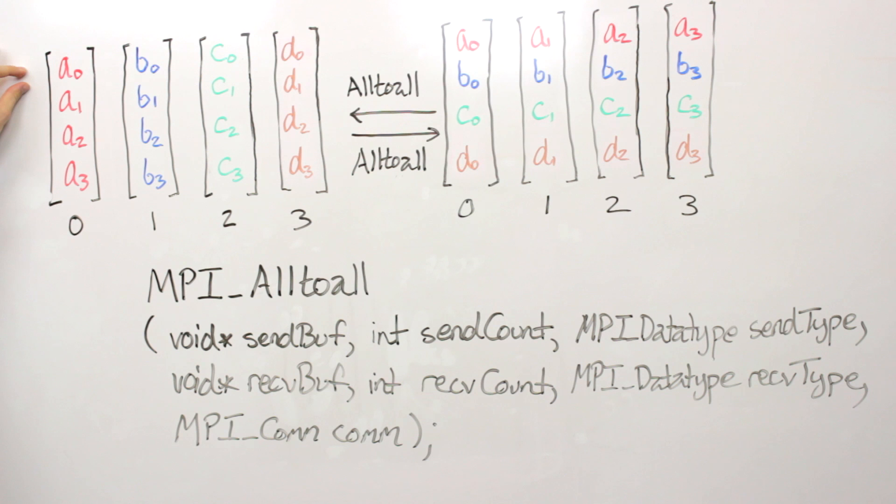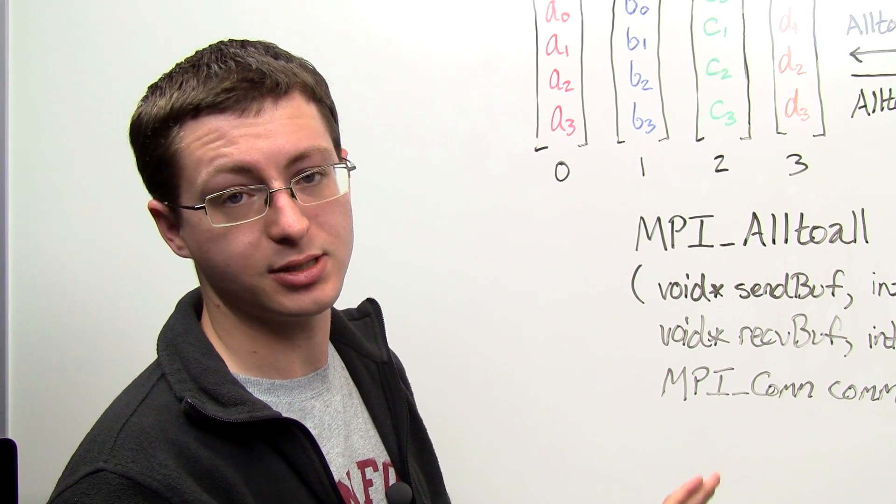So a0 might be 16 floating point numbers, a1 would also be 16, etc. And so each of these different subvectors is different on each process in general.